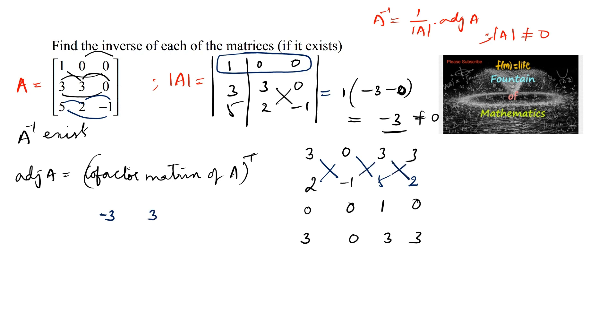3 times 6: 6 minus 15 is negative 9. 2 into 0 minus 0 into negative 1 is 0. Minus 1 into 1 minus 5 into 0 is negative 1. 5 into 0 minus 2 into 1: 0 minus 2 is negative 2. 0 into 0 minus 3 into 0: it's 0. 0 into 3 minus 0 into 1: it's 0 again. 1 into 3: 3 minus 0 is 3.